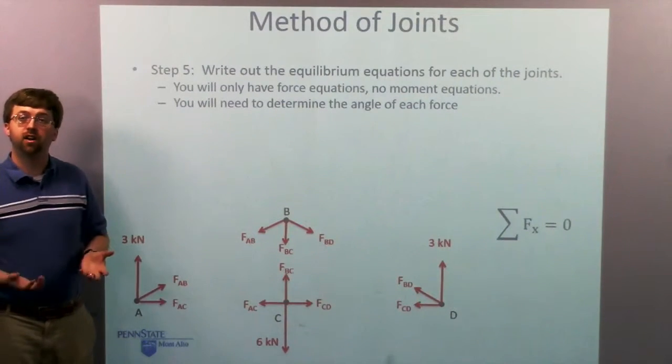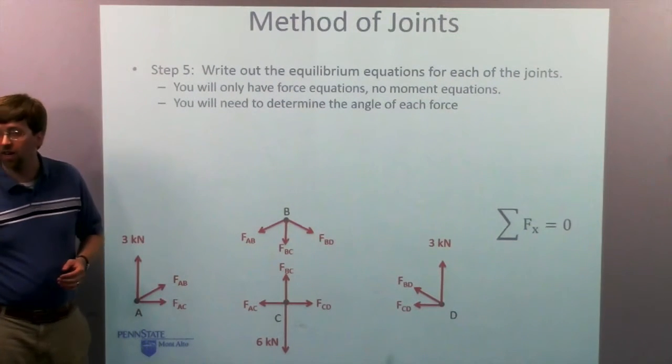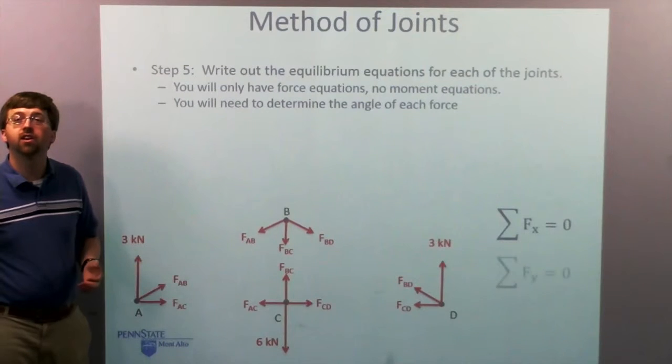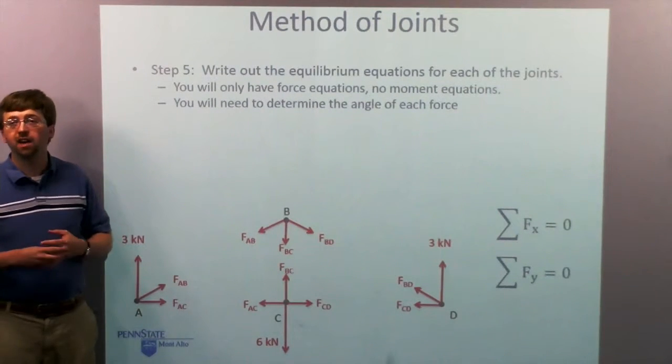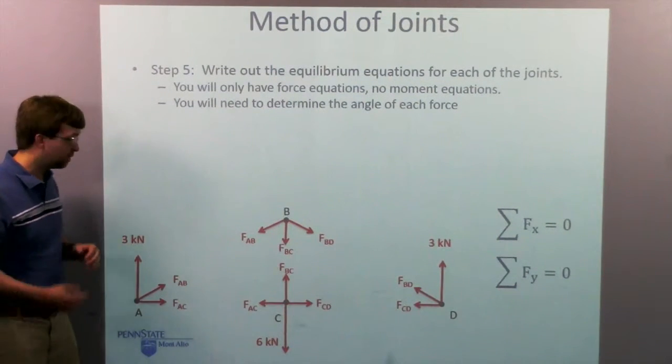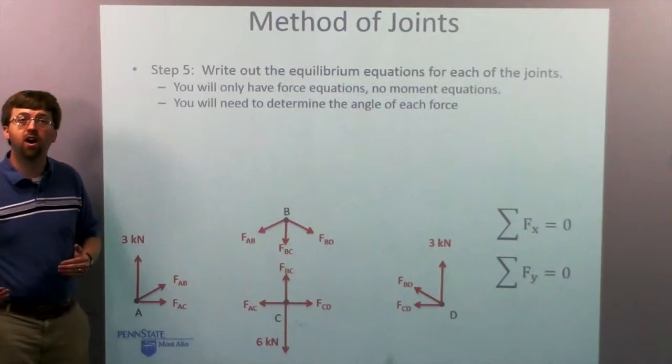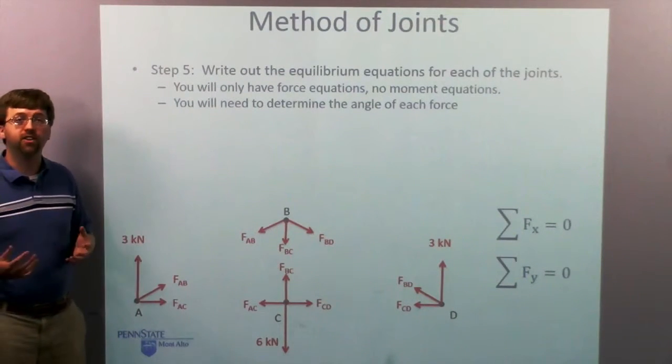So for a two dimensional problem, a plane truss, I've got forces in the X and forces in the Y. And I'm going to have eight total equations. I'm going to have force in the X and force in the Y is equal to zero for each of these joints.